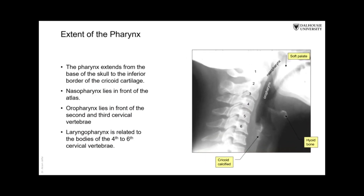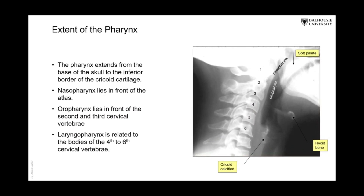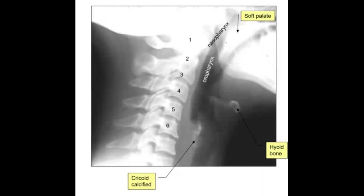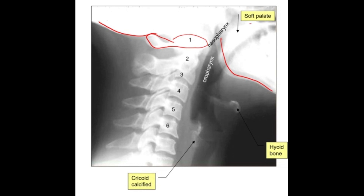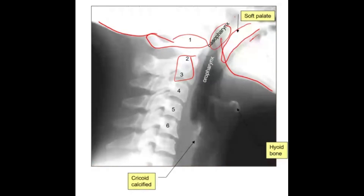This is to show you the extent of the pharynx. The pharynx extends from the base of the skull. This is a lateral view of the neck showing part of the skull. You can see the mandible, the occipital bone, and the first cervical vertebra — the atlas. This is the soft palate, and the radiolucent area above it is the nose and below it is the mouth, so this will be the nasopharynx.